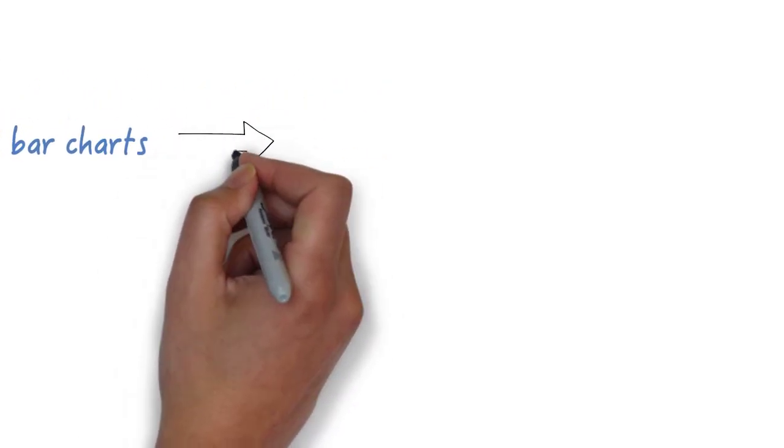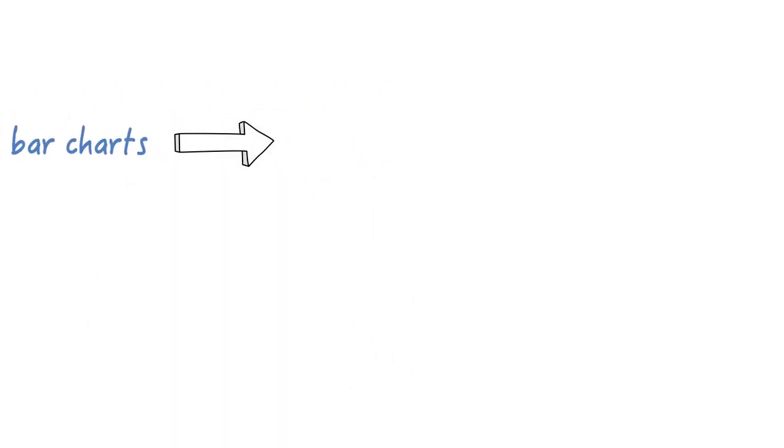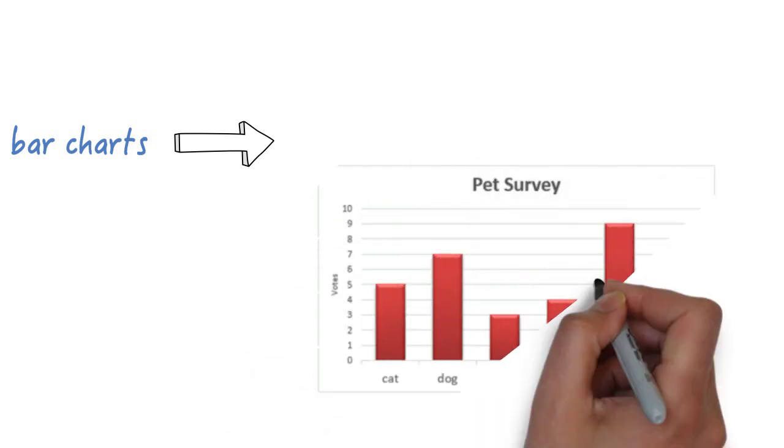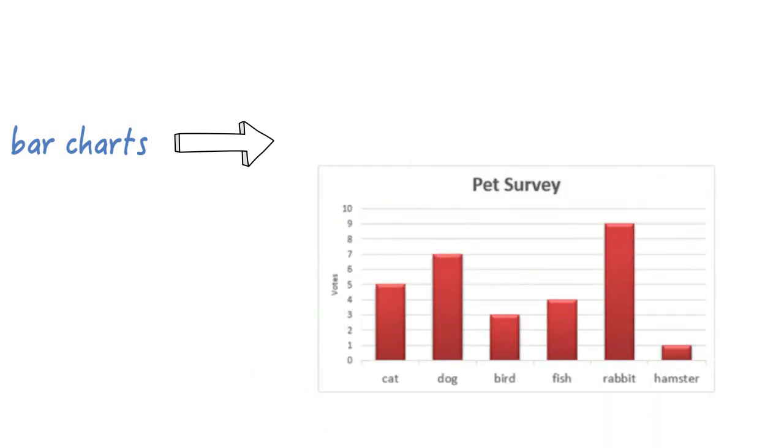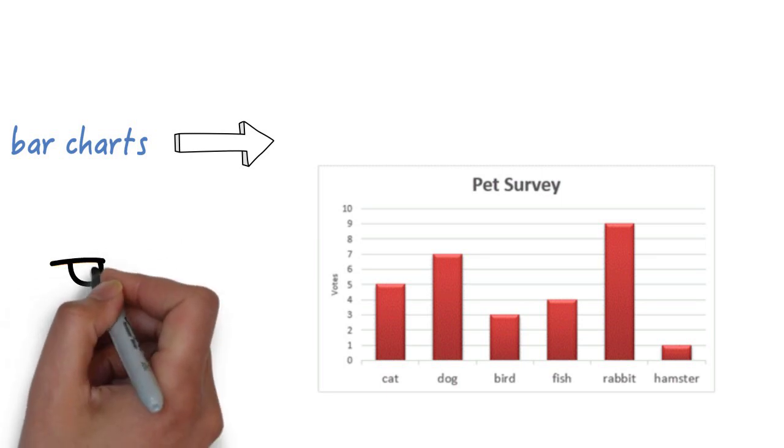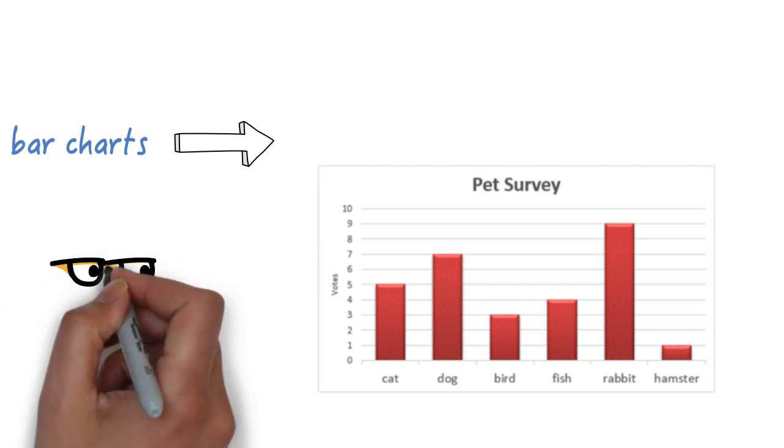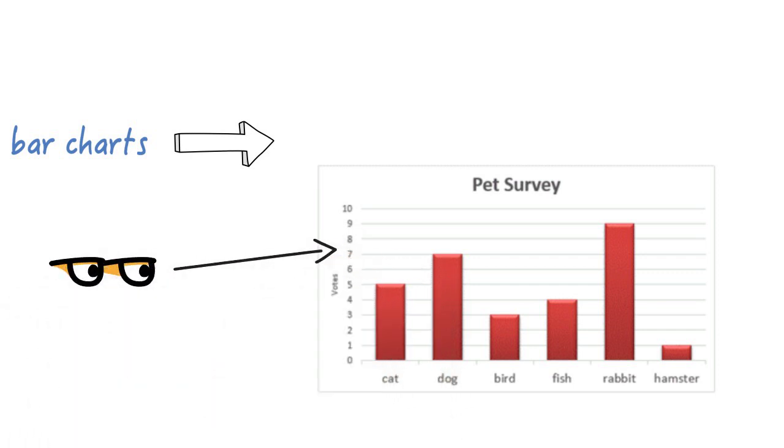And finally this is a block graph. You show the information by drawing blocks. This one shows the pets that children have. You can see that on one side it shows the amount of children and at the bottom it shows the different pets. You can see how many of each pet there are by looking at where the bar finishes.